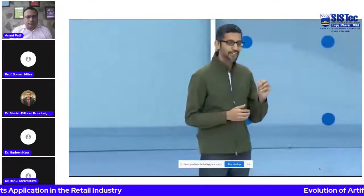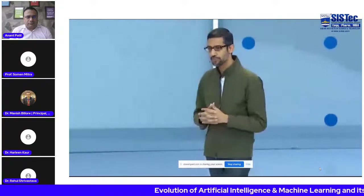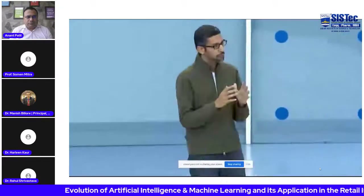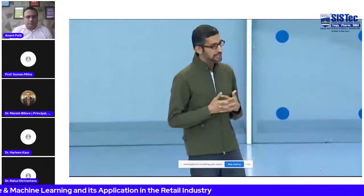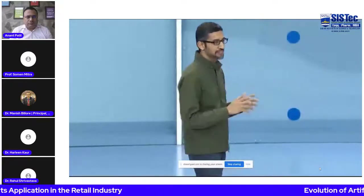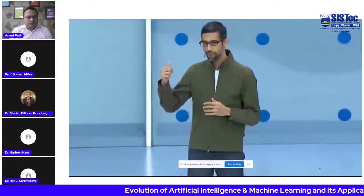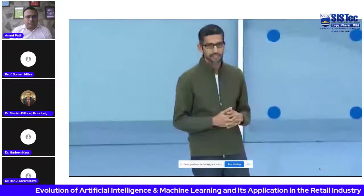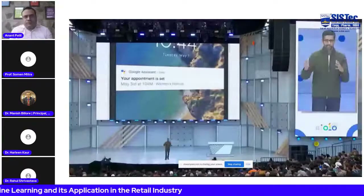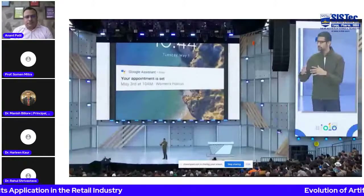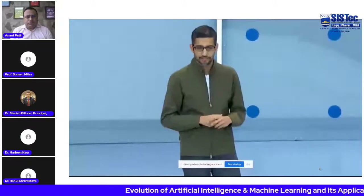That was a real call. The amazing thing is the assistant can understand the nuances of conversation. This technology, called Google Duplex, brings together all Google's investments over the years in natural language understanding, deep learning, and text-to-speech. When done, the assistant gives you a confirmation notification. Another example: calling a small restaurant not easily available to book online — the call goes a bit differently than expected.